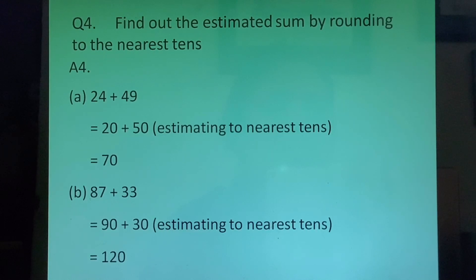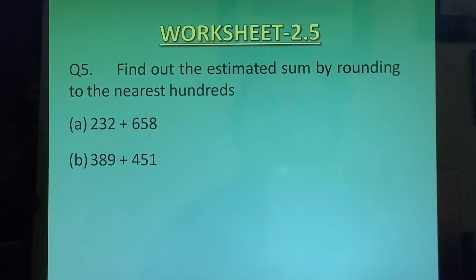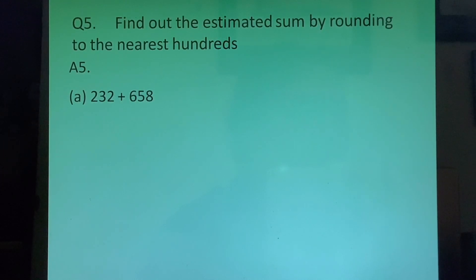Question 5 Let's find out the estimated sum by rounding off to the nearest hundreds. In this question we have to round off to hundreds. So 232 will round off to 200 and 658 will round off to 700. Answer would be 900.